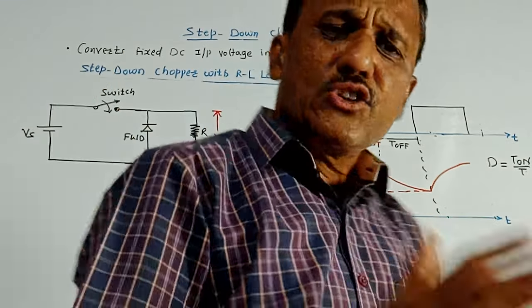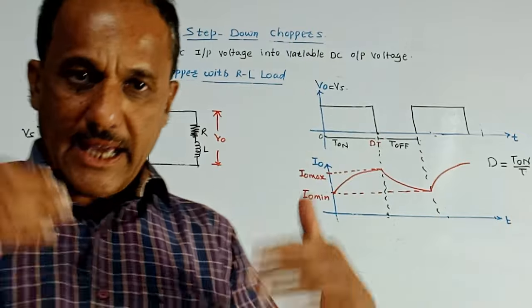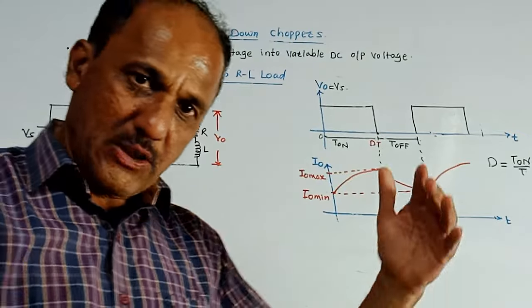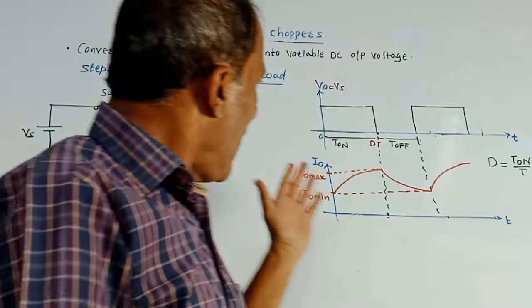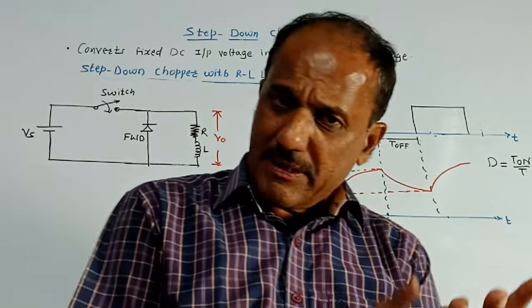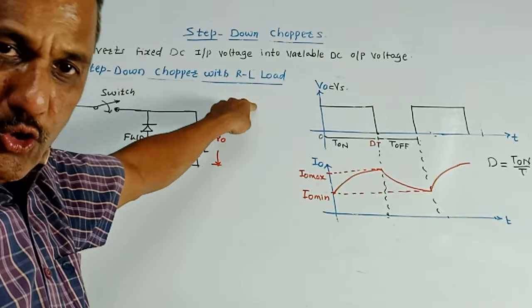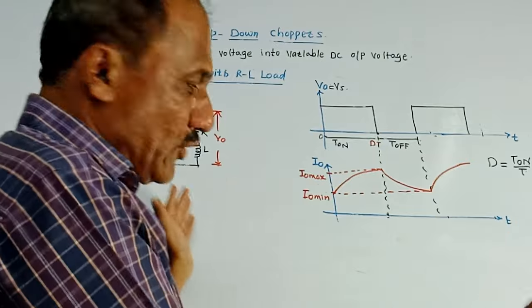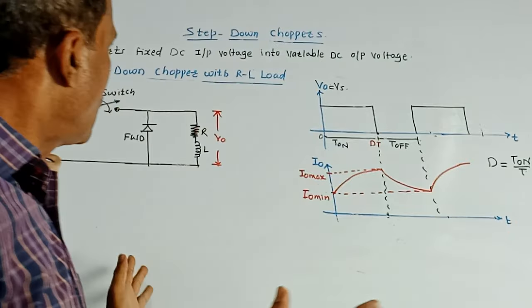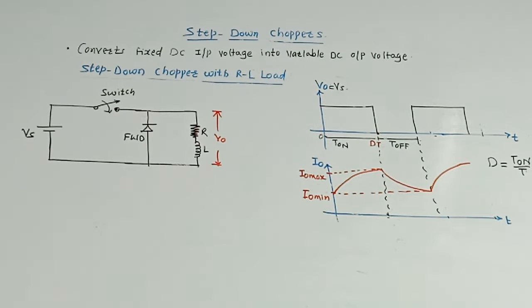Now analysis of this circuit that is calculation of average output voltage and RMS output voltage as well as RMS output current remains same as that of earlier case. Because average output voltage and RMS output voltage, this waveform is same to that of RL load. So that calculation we have already done. So the calculation remains same. So dear students, that's it for today's session. So thank you. Thanks a lot for watching this video.